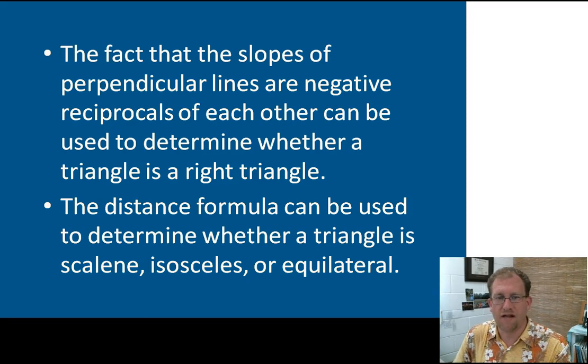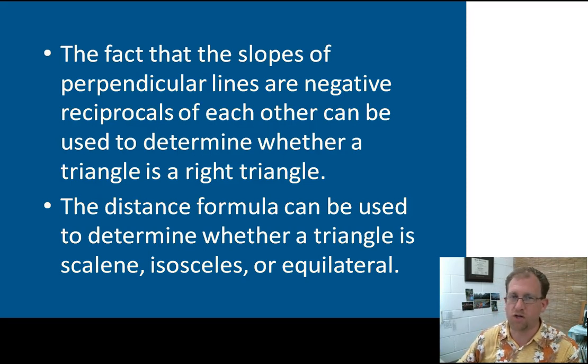The fact that the slopes of perpendicular lines are negative reciprocals of each other can be used to determine whether a triangle is a right triangle. If you have the slope of one line and the slope of another line in a triangle and they meet, you could look at the slopes of the two lines that make up that intersection and determine that it is, in fact, a 90 degree angle if the slopes are a negative reciprocal of each other. Also, the distance formula can be used to determine whether a triangle is scalene, isosceles, or equilateral.